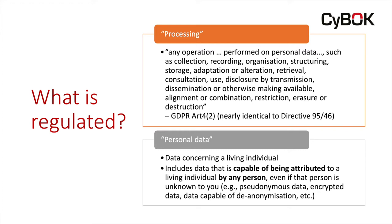The question naturally becomes, are we processing personal data? Personal data is data concerning a living individual. Personal data includes data capable of being attributed to a living individual by any person — even if that person is unknown to you, even if it's somebody else. In practice, this means that pseudonymous data, encrypted data, any data capable of de-anonymization by anybody, anywhere, is personal data.